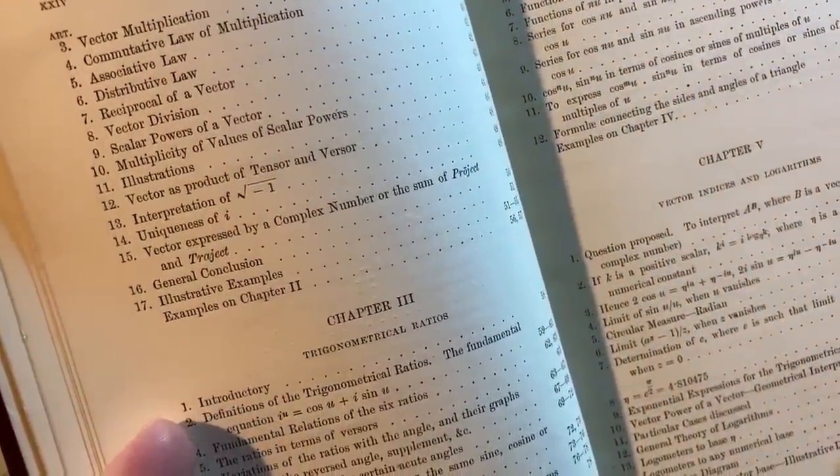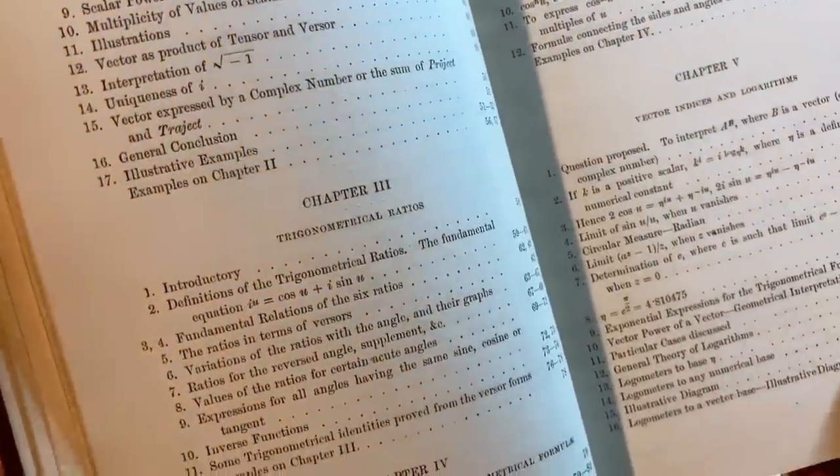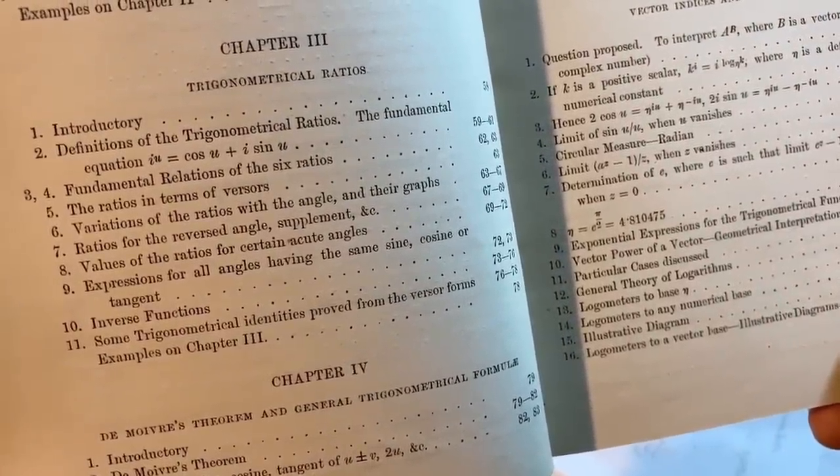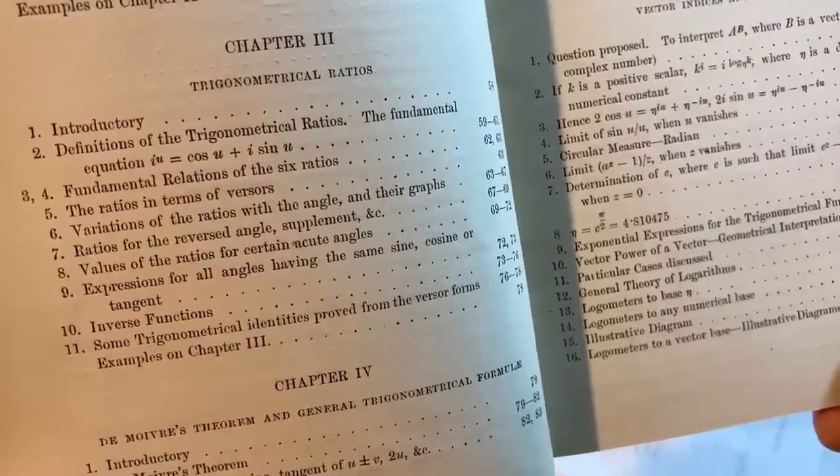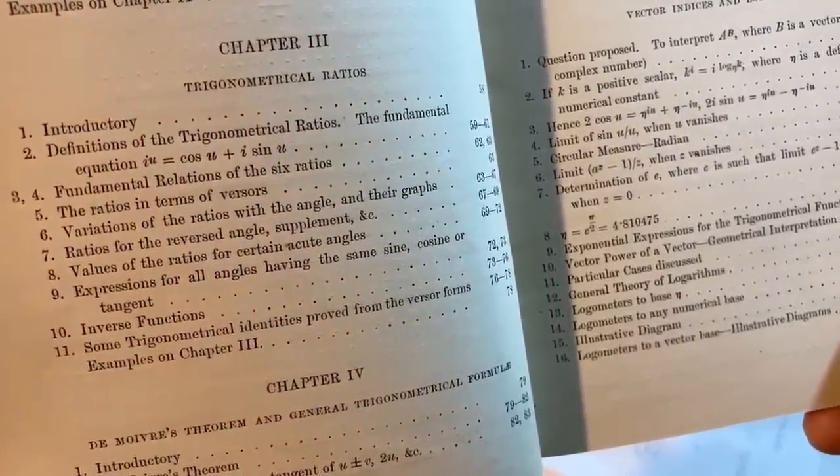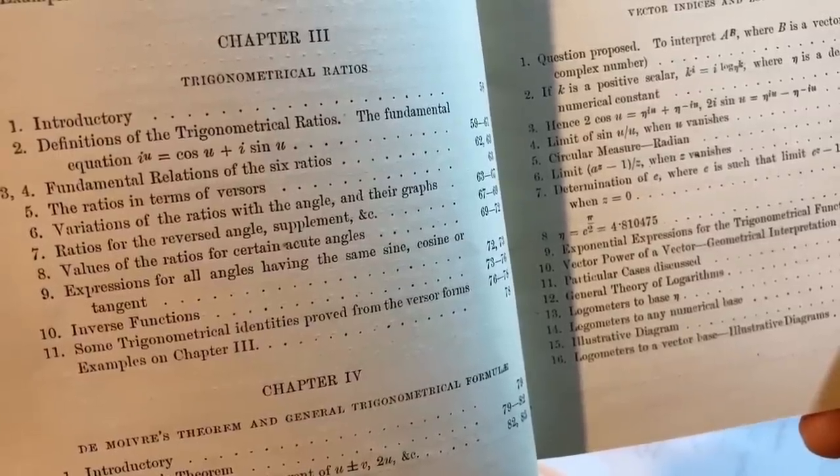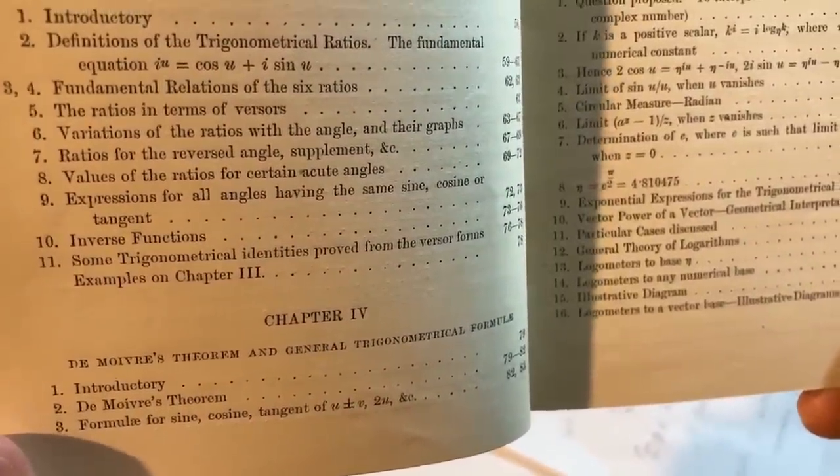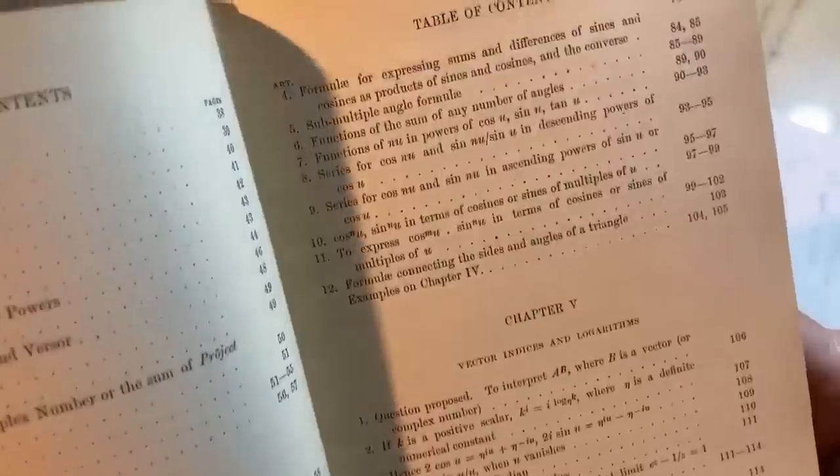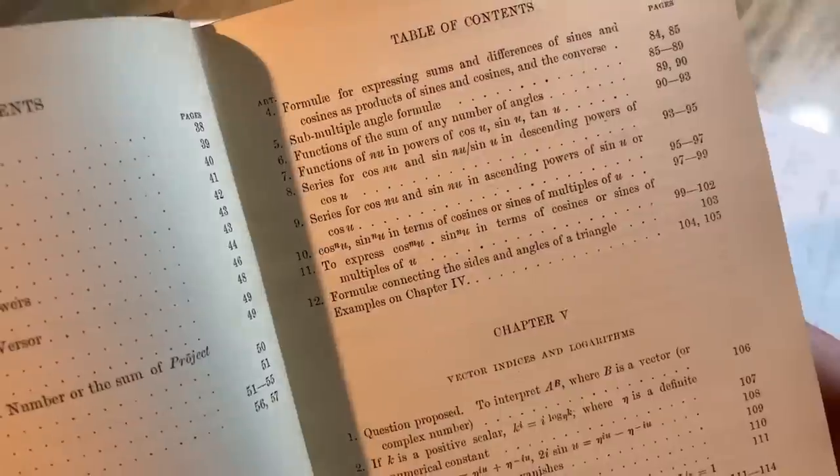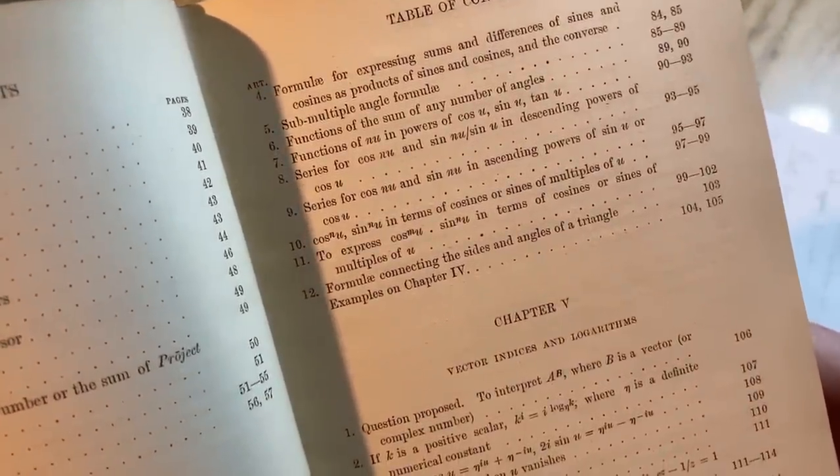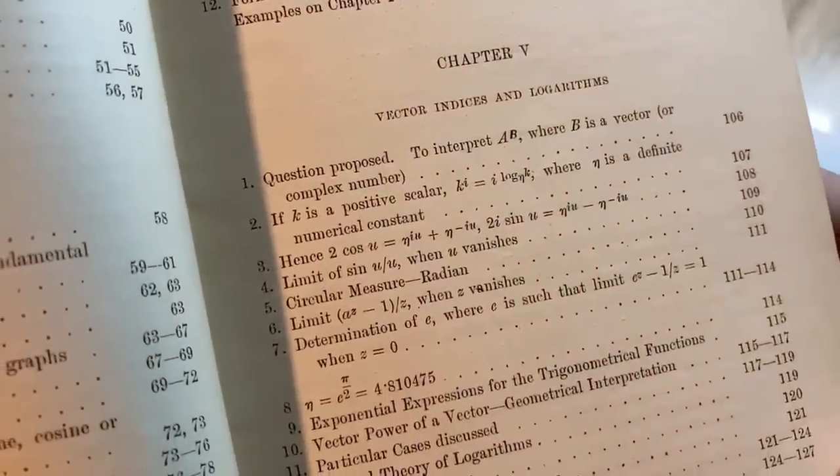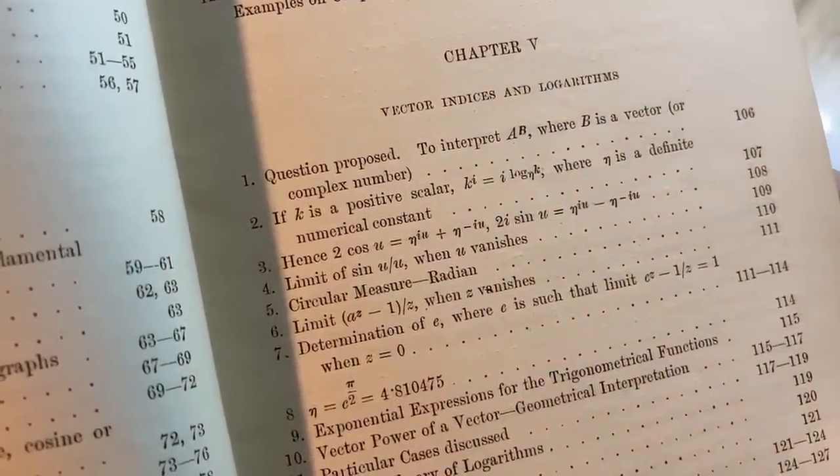More stuff with vectors. Vector division, uniqueness of i, trigonometrical ratios, definitions of the trigonometrical ratios, the fundamental equation i to the u equals cosine u plus i sine u, fundamental relations of the six ratios, ratios in terms of versers. Some interesting language right? They have interesting language in some old books. I have one of De Morgan's books, I actually have a book written by De Morgan and the language is really really old school. It's like really old English, very - yeah they use words that are very hard to understand, it will be shoon I would say shoon instead of shown.